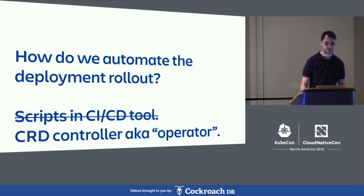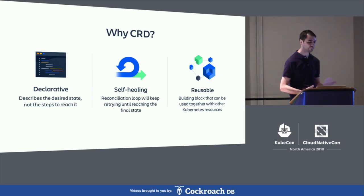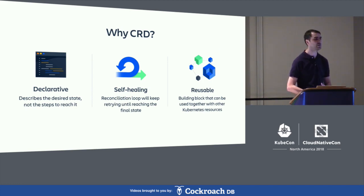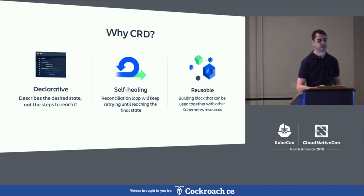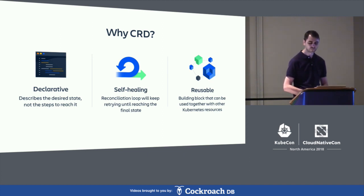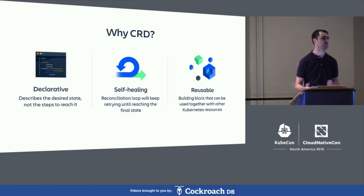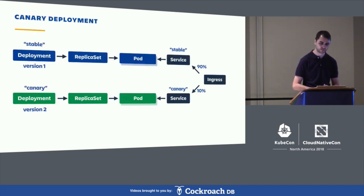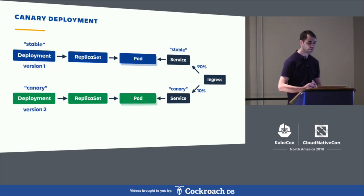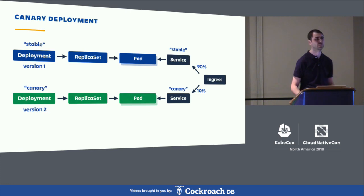Why CRDs? Just to name a few benefits. Declarative: we describe the desired state rather than the steps to reach it. Self-healing: the Kubernetes control loop will take care of making sure we reach the final state and will retry if needed. And finally, reusability: if you build a CRD as a building block, you can use it along with other CRDs or Kubernetes native resources in the same way as any other Kubernetes resource.